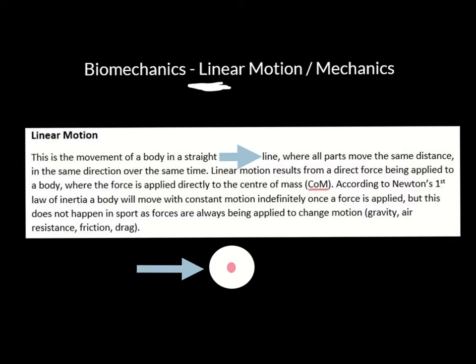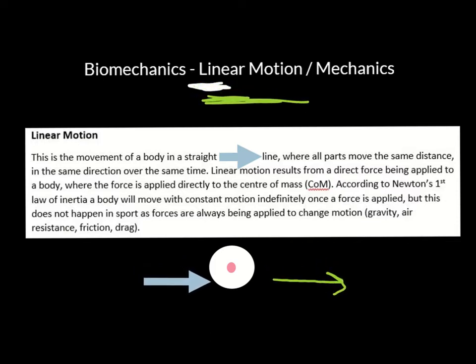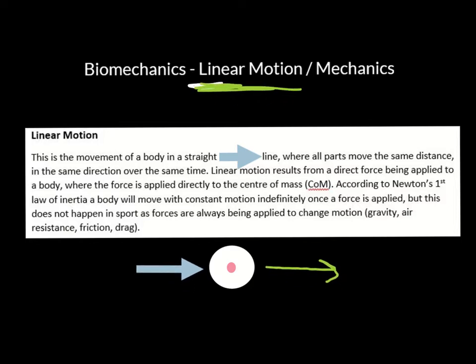I'm going to do a video on angular motion. If I was to apply a force outside of the centre of mass — if I hit the ball and apply a force there — that is going to cause swerve on the ball. But in linear motion, I want to apply a force straight through the centre of mass so the ball travels in linear motion.